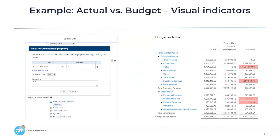Next is our simple actual versus budget report we just saw, but including visual indicators. This visual indicator shows when the budget difference is less than zero and highlights that directly in your report in red.